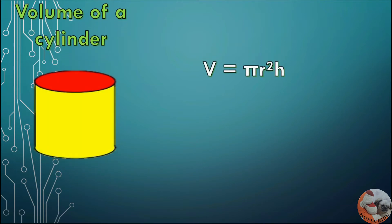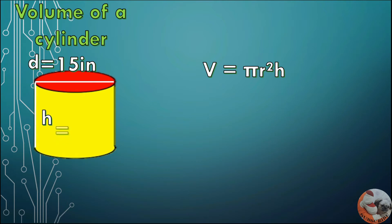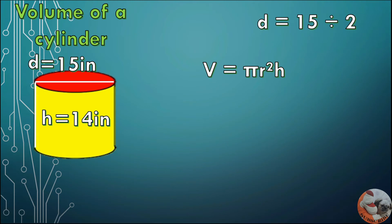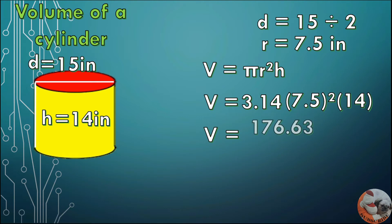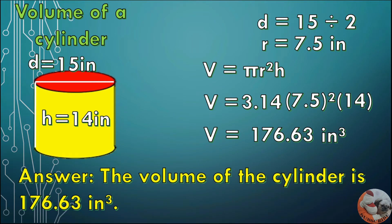The volume of the cylinder is 351.68 cm³. For the next example, height = 14 inches. Since the diameter is given, divide the diameter by 2 to get the radius. The radius of this cylinder is 7.5 inches. V = 3.14 × 7.5² × 14. Volume = 176.63 cubic inches.